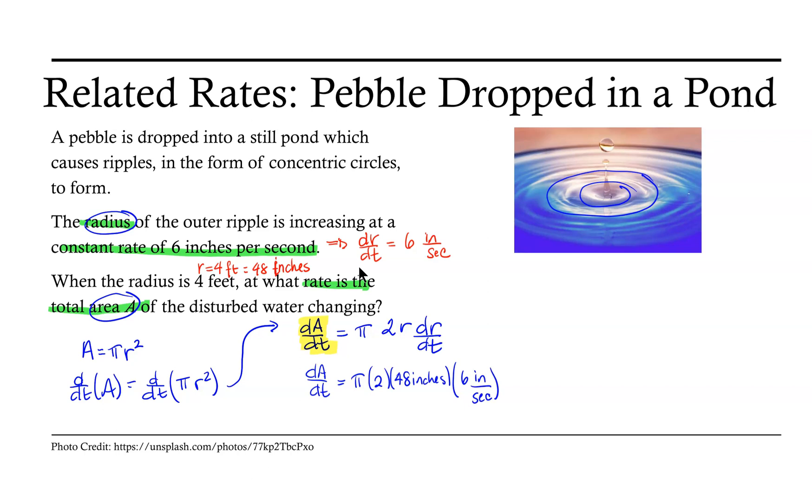And when I multiply those all together, dA/dt equals 576 times pi. Notice my units here. I've got inches times inches, so those are square inches, and then I've got that over seconds.